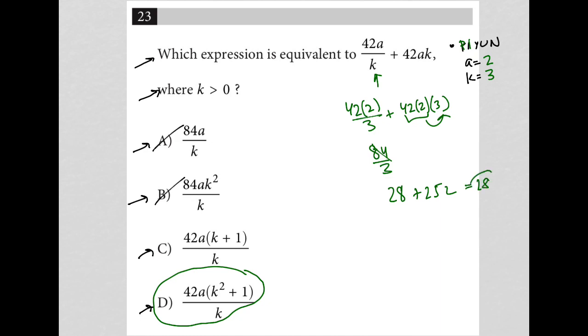Okay. So I know that based upon plugging my numbers in, a equals 2 and k equals 3, I get a value of 280 from my question. So now the next part of the process with plugging in your own number is to plug those exact same numbers into the answer choices and see which one matches the 280 that you got when you plug them into the question.